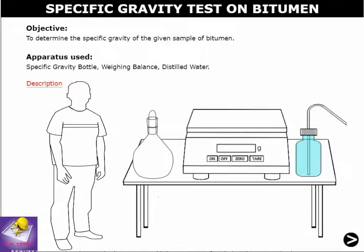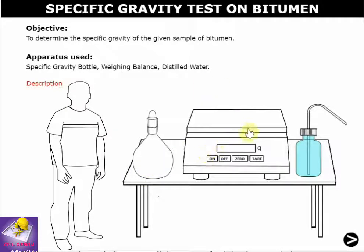This test is conducted to determine the specific gravity of bitumen. The apparatus used includes a specific gravity bottle, a weighing balance, and distilled water.